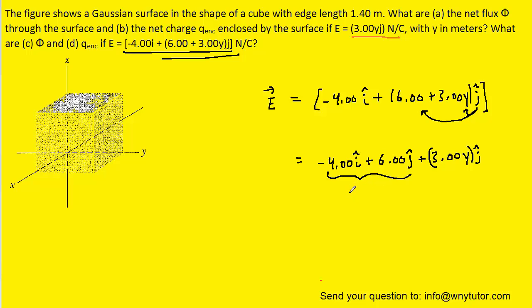To understand why constant fields contribute zero net flux: a constant field pointing along the negative x-axis, for example, would enter one face of the cube and exit the opposite face. However much flux enters equals however much exits, so the net flux is zero. The same argument applies to the constant j-hat component.